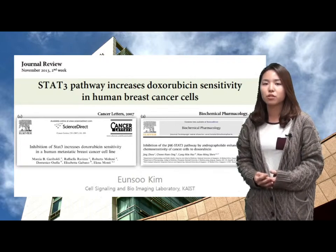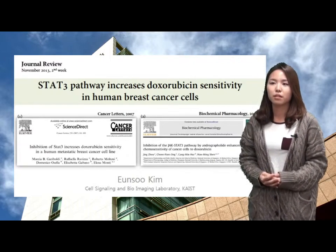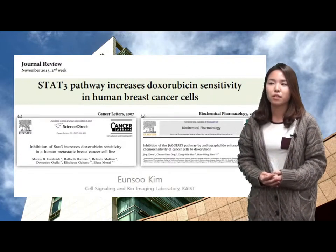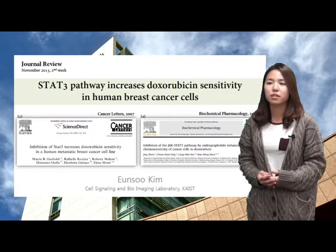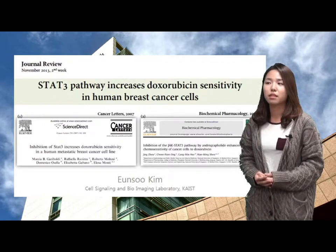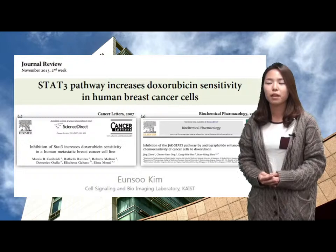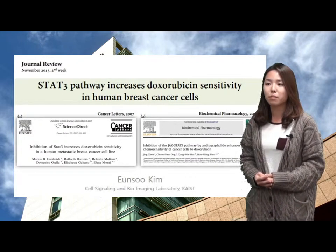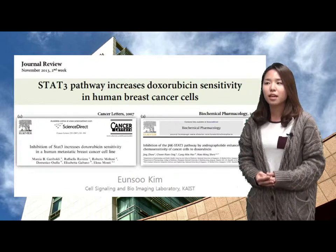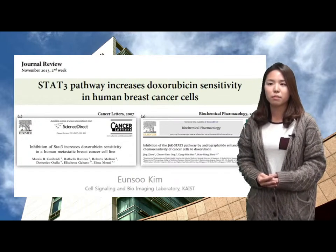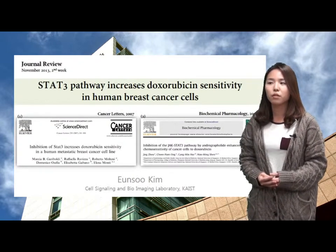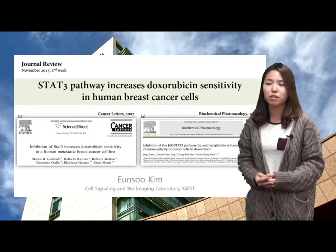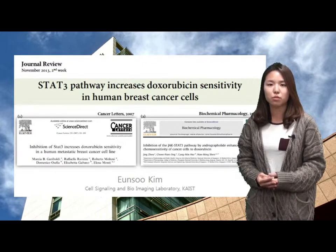The first paper was published in 2007 in Cancer Letters, and the title is Inhibition of STAT3 Increases Doxorubicin Sensitivity in a Human Metastatic Breast Cancer Cell Line. The second paper, which was published in 2010 in Biochemical Pharmacology, is Inhibition of the JAK-STAT3 Pathway by Andrographolide Enhances Chemosensitivity of Cancer Cells to Doxorubicin.